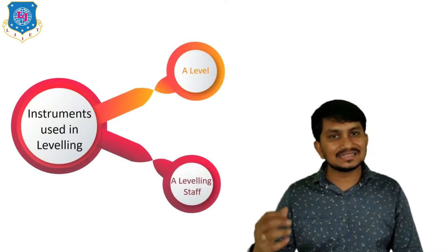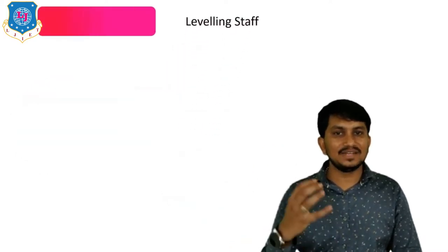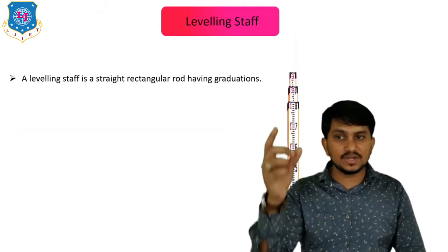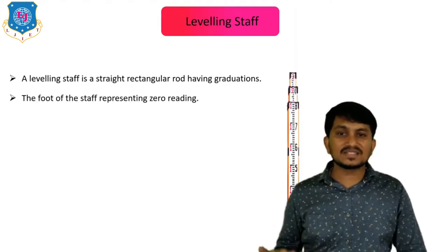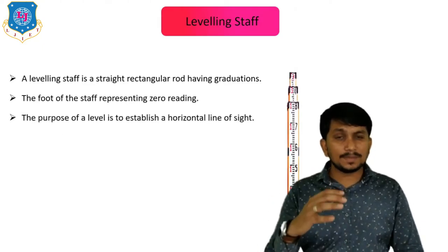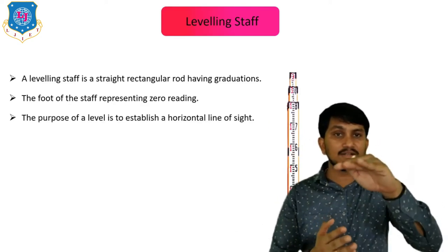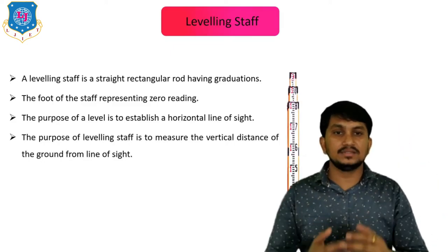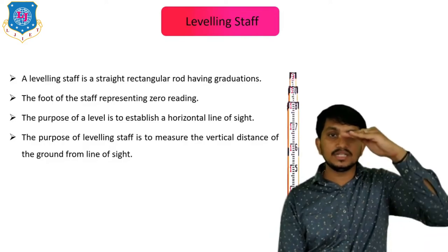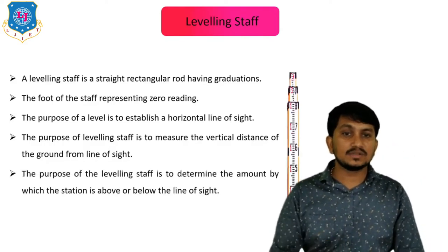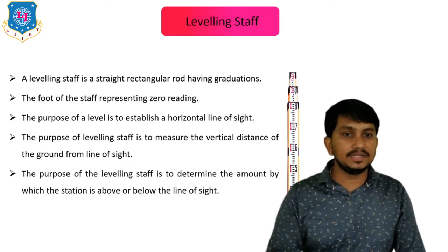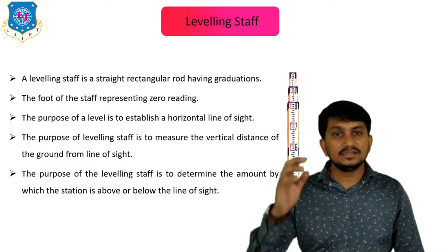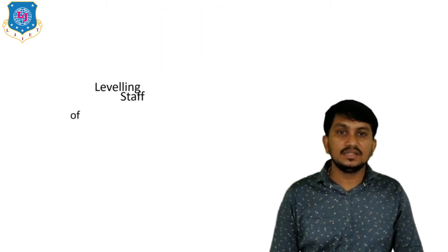A leveling staff is a straight rectangular rod having graduations, with the foot of the staff representing zero. The purpose of the level is to establish a horizontal line of sight through the telescope, while the purpose of the leveling staff is to measure the vertical distance from the ground surface to the line of sight and to determine how much a station is above or below the line of sight.